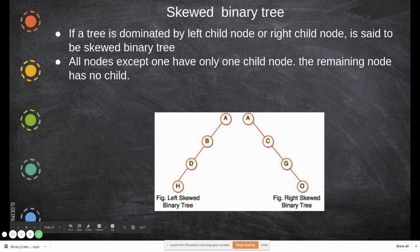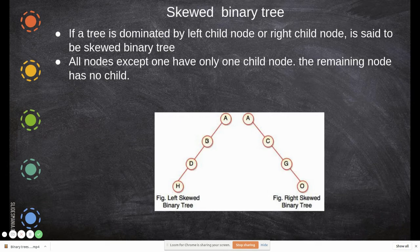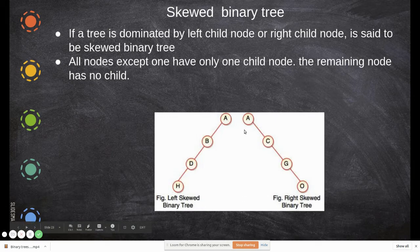Skewed binary tree: if a tree is dominated by left children — after the root, each node has only a left child — this is called a left-skewed tree. If only right children are present and there are no left children, this is said to be a right-skewed tree. In both cases, every node has only one child.